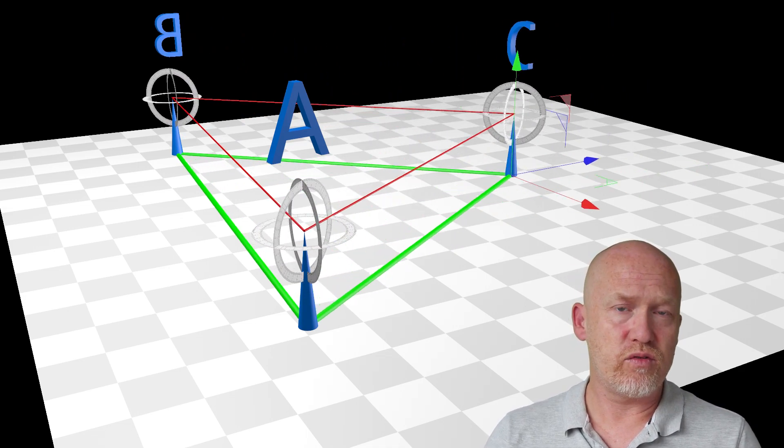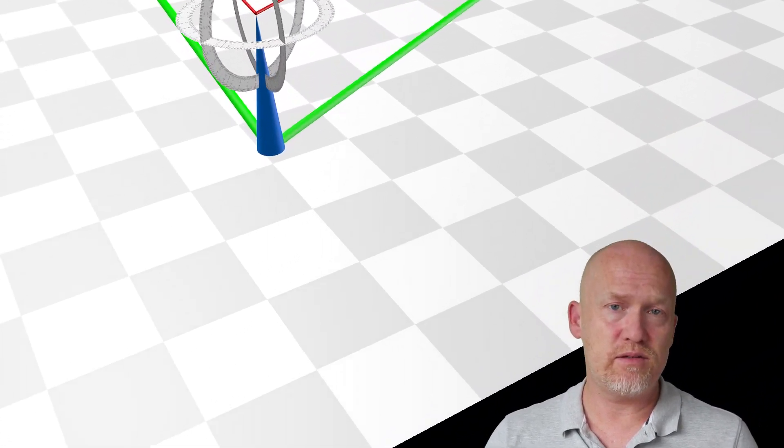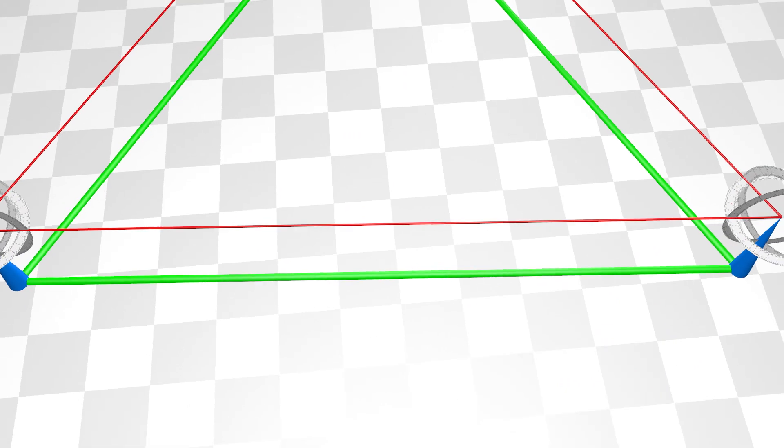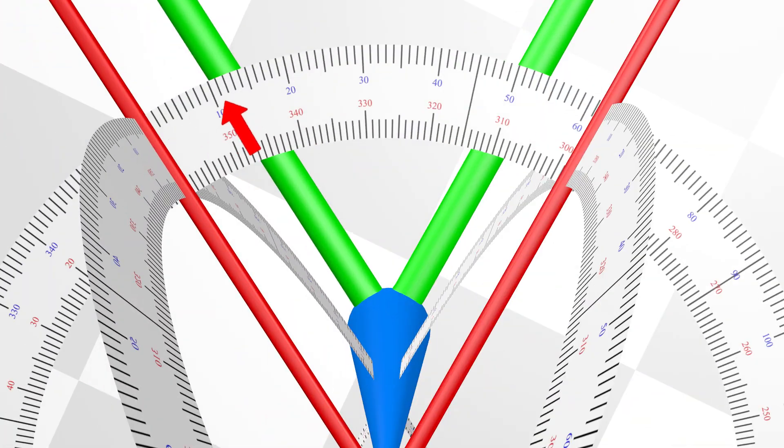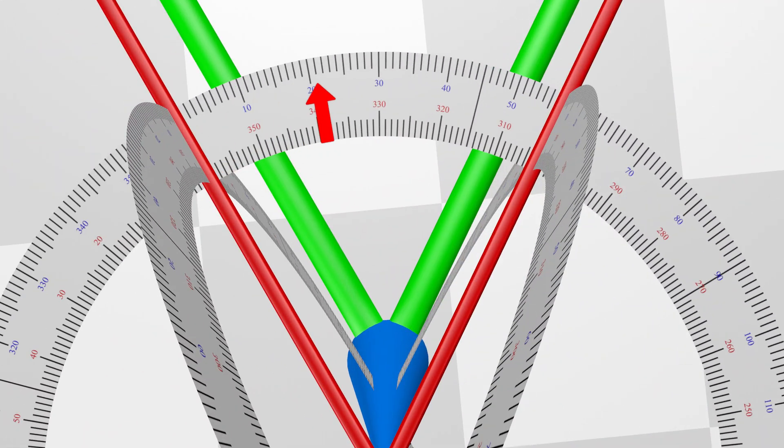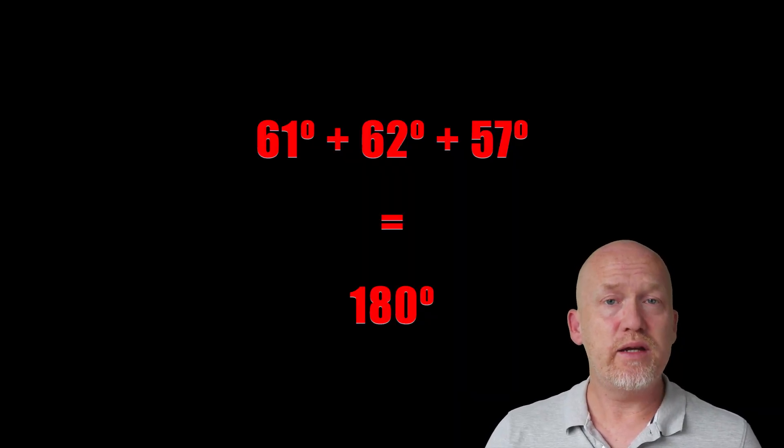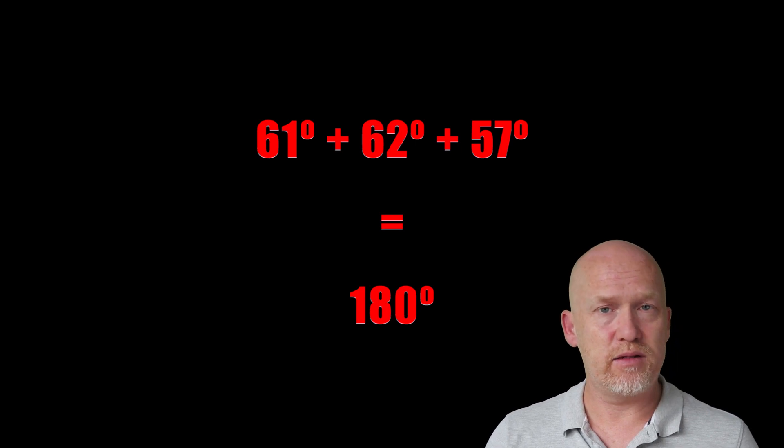Let's read off the angles from A, B, and C. When we add these angles together, we get 180 degrees as expected.